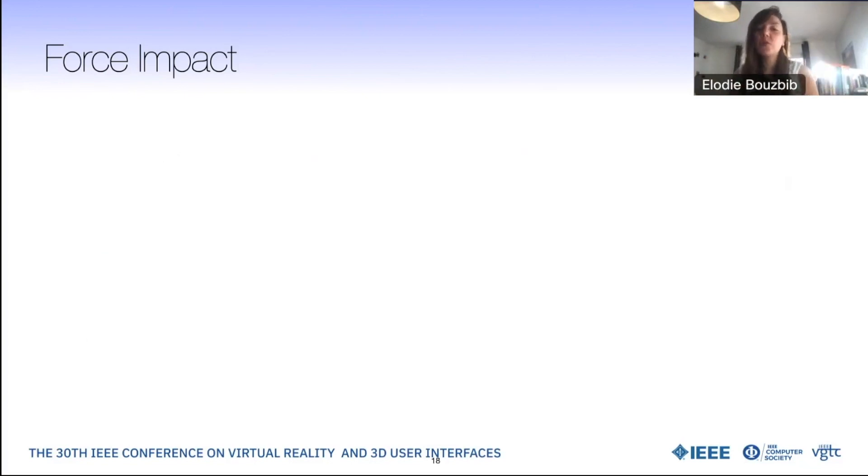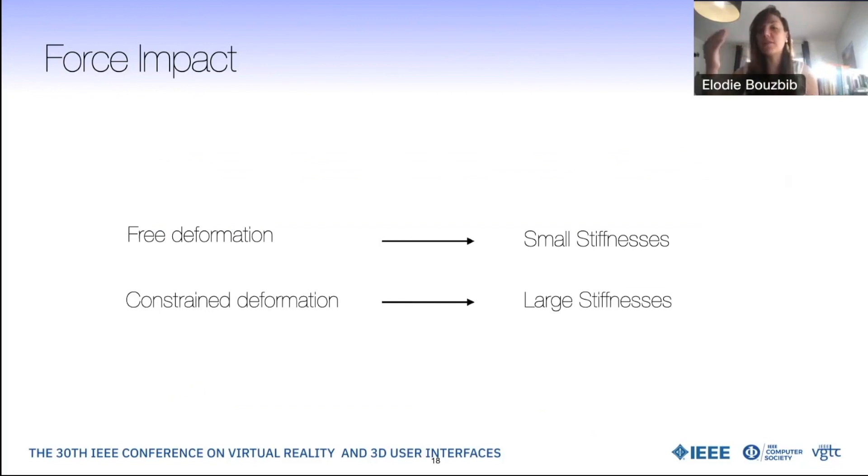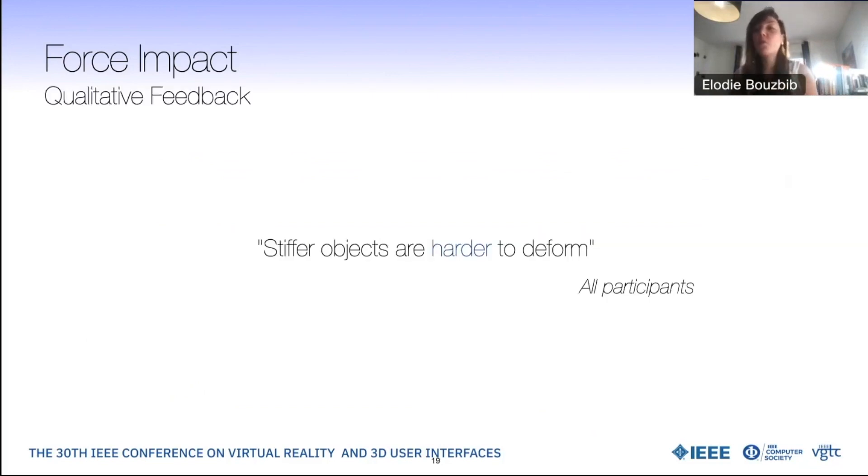We globally show that free deformation is more efficient in small stiffnesses, potentially up to 12 newton per centimeter. And respectively, the constrained deformation had better results than the free one in large stiffnesses, with 100% similar answers at 16 newton per centimeter. In terms of qualitative feedback, all participants mentioned that they're on their own that the stiffer objects were harder to compress and were quite surprised when knowing that the force thresholds to validate the compression were similar for all of them.